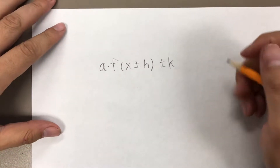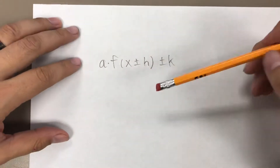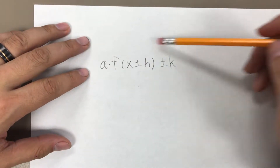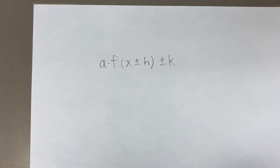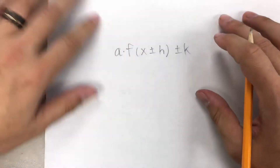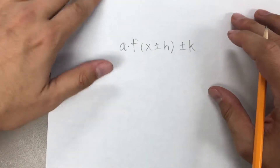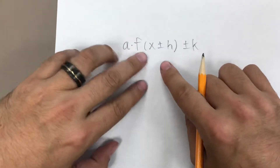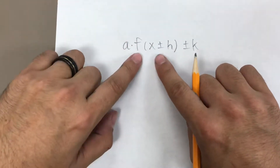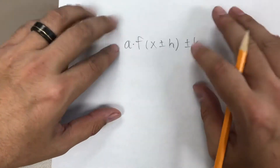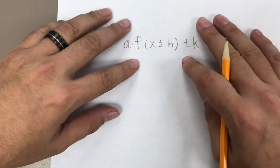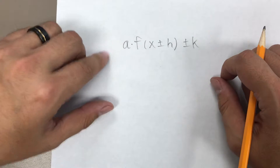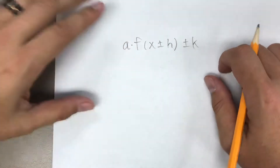Hey there, this is your old pal Mr. Cook, and we are going to go through transformations of functions. What that means is that we're going to take a base function called a parent function, and we're going to change it around — like add numbers onto the x values, add numbers onto the functions themselves, and multiply numbers onto the functions and the x values as well.